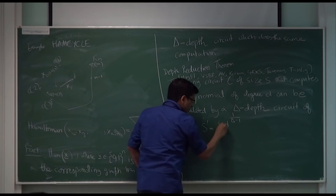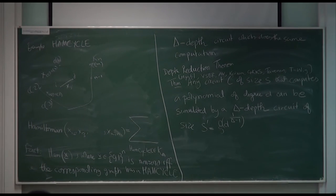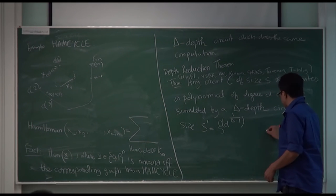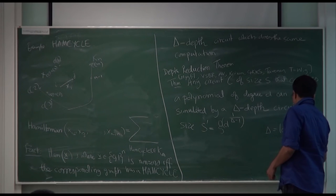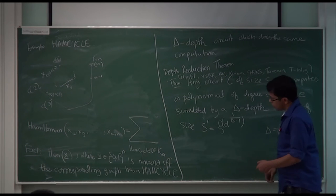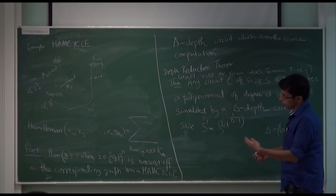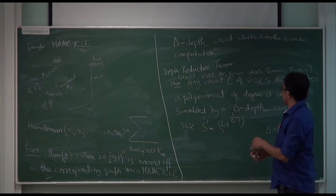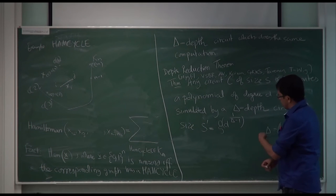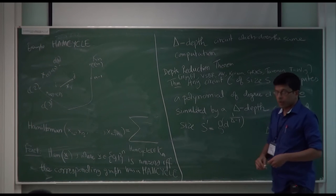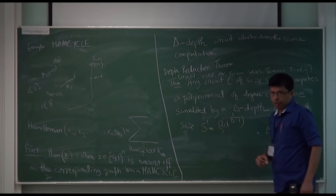We now know the following upper bound — there is a constant in the exponent. Let me make two points about this. First, you could choose delta to be log d, in which case you start with a circuit of size s computing a polynomial of degree d, and you get another circuit of depth log d and only polynomially larger size which does the same computation. That is one interesting setting of parameters.